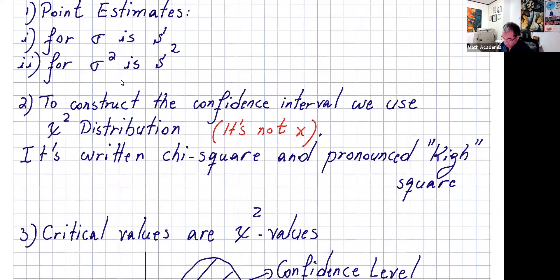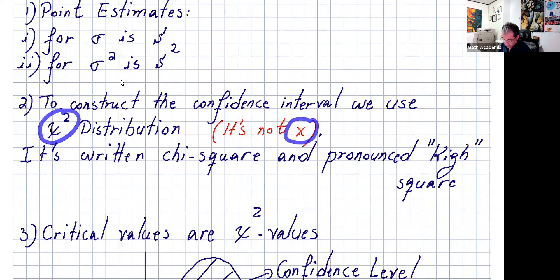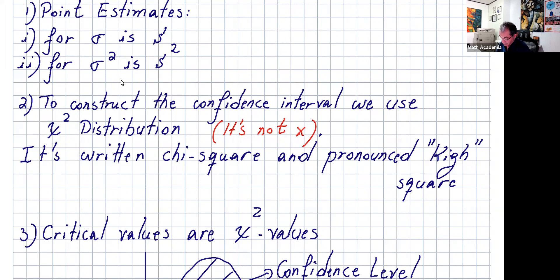Number two: to construct a confidence interval, we use chi-squared distribution. Now this is not x — this is chi. So it's chi, but we need chi-squared. We write it in English as chi-squared and it's pronounced chi-squared.